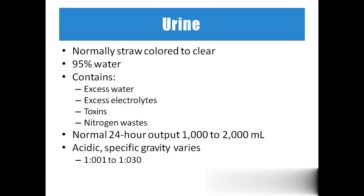Urine is straw-yellow in color. About 95% of urine is water. It contains excess water, excess electrolytes, and toxins — which means nitrogenous waste: urea, uric acid, and ammonia. Normally, per day, we excrete around 1 to 2 liters of urine.